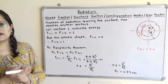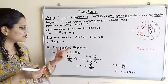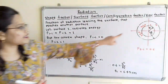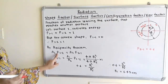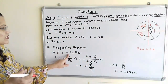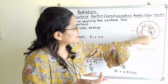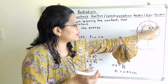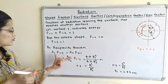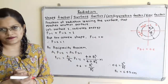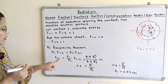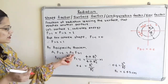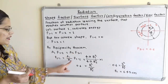Now we apply the reciprocity theorem to the two surfaces. This states: A1 × F(1→2) = A2 × F(2→1). Rearranging, F(2→1) = (A1 / A2) × F(1→2). Since we know F(1→2) = 1, we get F(2→1) = A1 / A2.